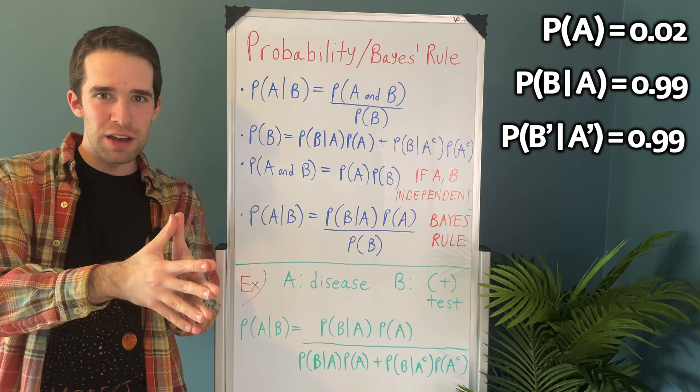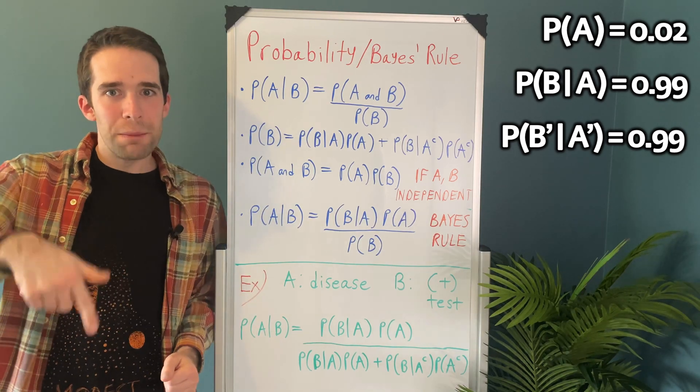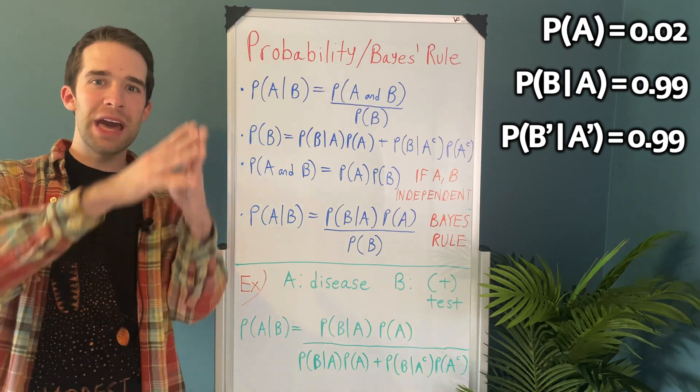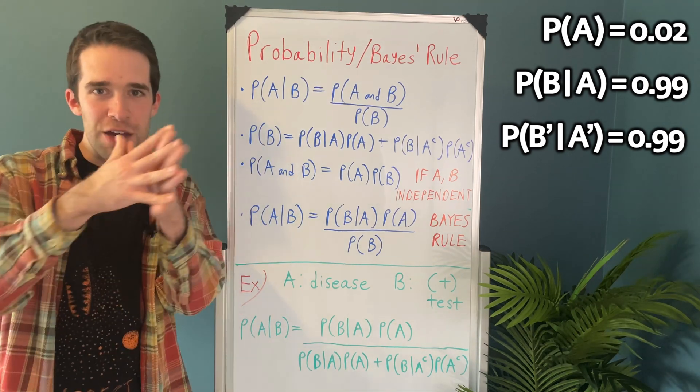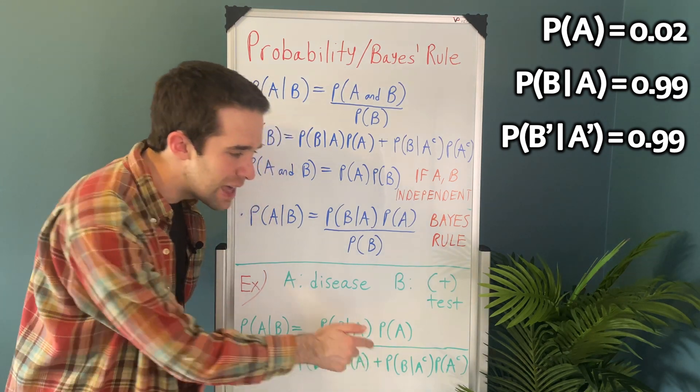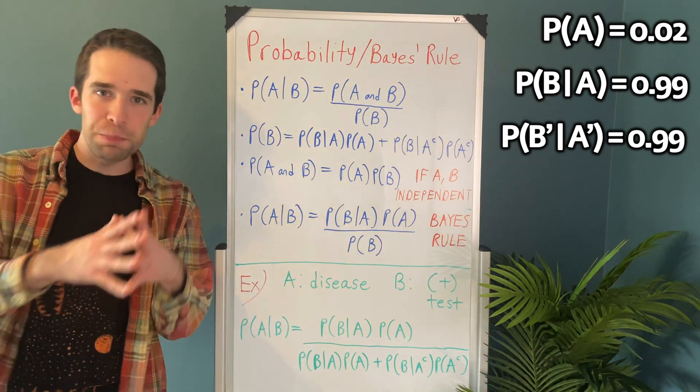That's 99%. But actually, if we just do one minus that, now suddenly we have the probability that we get a positive test result if we don't have the disease. That's actually probability of B given A complement, and that's 0.01.